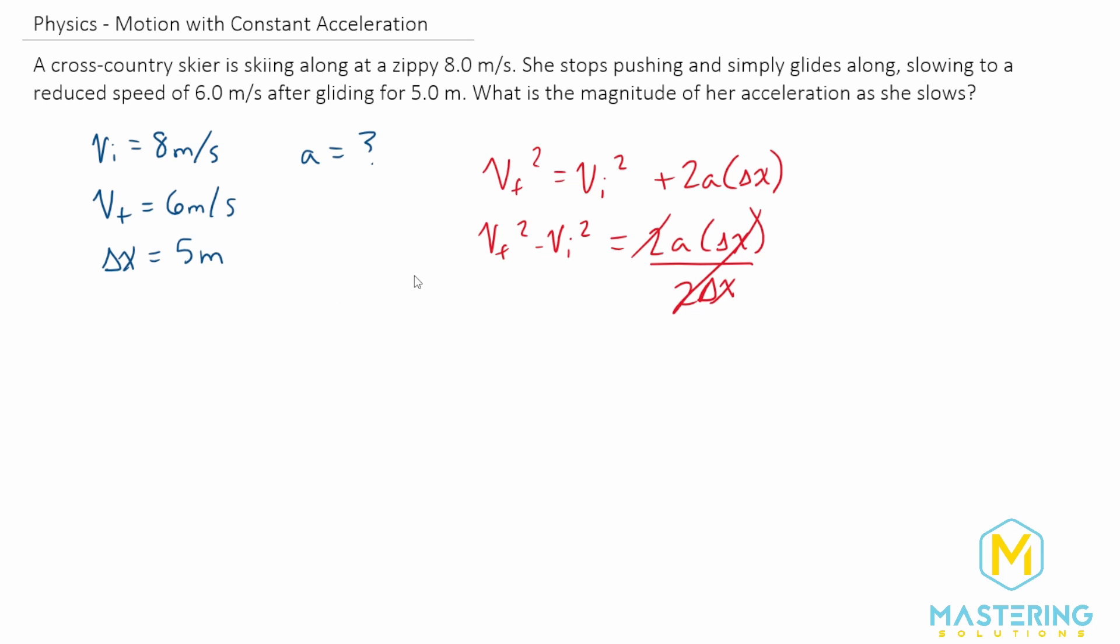So now let's come over here, so we have some room. So we have v final squared minus v initial squared divided by 2 delta x is equal to the acceleration. And we have all these, so we can just plug it into our formula.